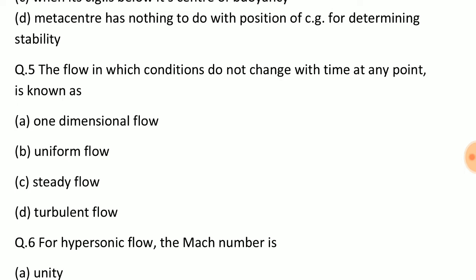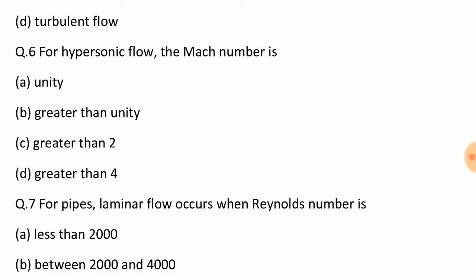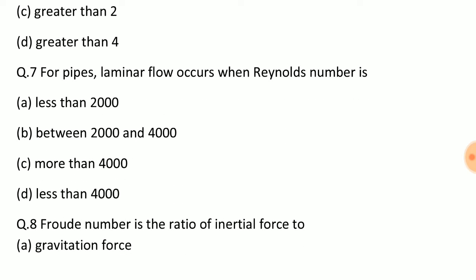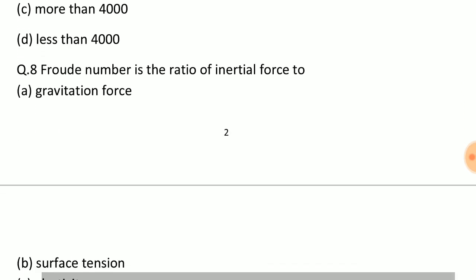Question: The flow in which conditions do not change with time at any point is known as? Answer: Option C, steady flow. Question: For hypersonic flow, the Mach number is? Answer: Option D, greater than 4. Question: For pipes, laminar flow occurs when Reynolds number is? Answer: Option A, less than 2,000.